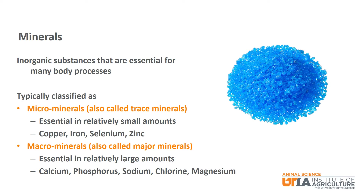Minerals are inorganic substances that are essential for many body processes. Minerals are generally classified into micro minerals and macro minerals. Examples of micro minerals, also called trace minerals, include copper, iron, selenium, and zinc. These minerals are needed in relatively small amounts by the animal. Examples of macro minerals, also called major minerals, include calcium, phosphorus, sodium, chlorine, and magnesium. These minerals are needed in relatively large amounts by the animal. Calcium and phosphorus are two minerals most often included on feed labels. It is important to monitor mineral levels and ratios as deficiencies and imbalances can occur depending on the feed provided to the animal.